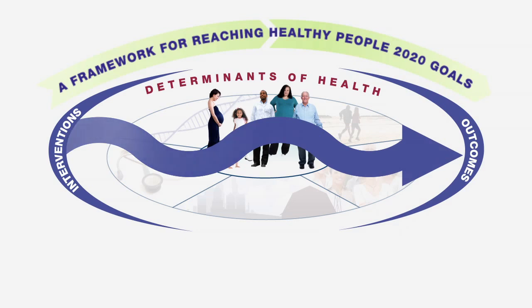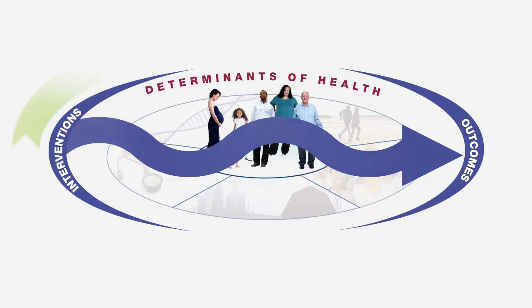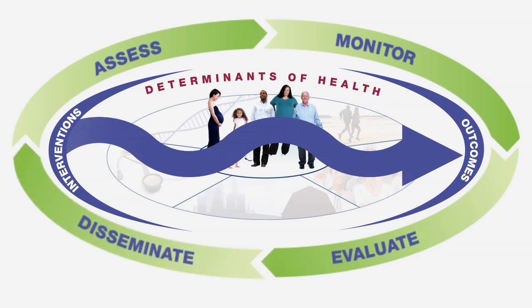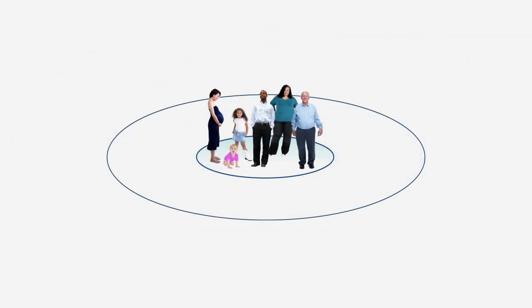Every intervention has a life cycle of its own — a continual process of improvement made up of four phases: assessment, monitoring, evaluation, and dissemination. Through this cycle, an intervention can be refined for greater effectiveness.